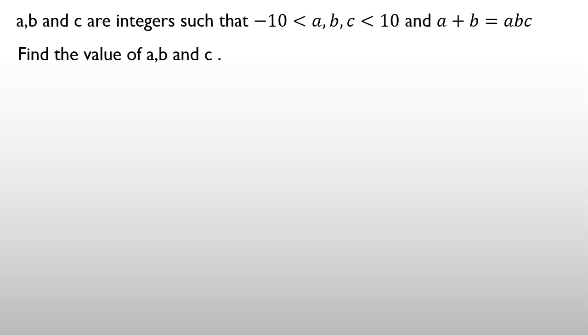A, B, and C are integers so that A, B, C are between negative 10 and 10, and A plus B equals A times B times C. Find the value of A, B, and C.